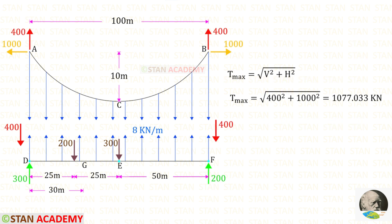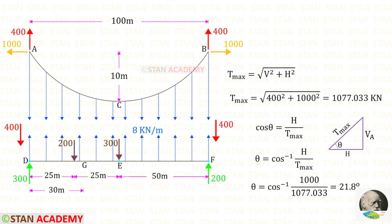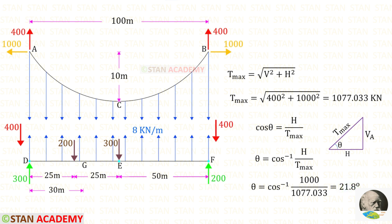Now let us find the maximum tension in the cable. The formula is the square root of V squared plus H squared. V is 400 and H is 1000. Finally, for T max we will get the result. We also need to find the slope where the maximum tension occurs. Using the cosine formula, we can find the slope theta, which is 21.8 degrees. Now we are going to end this session. Thank you for watching this video.